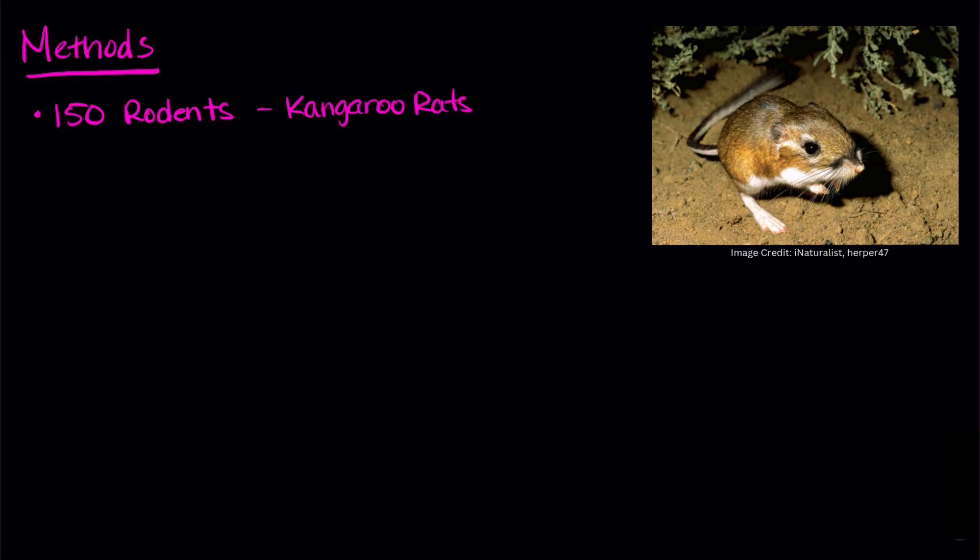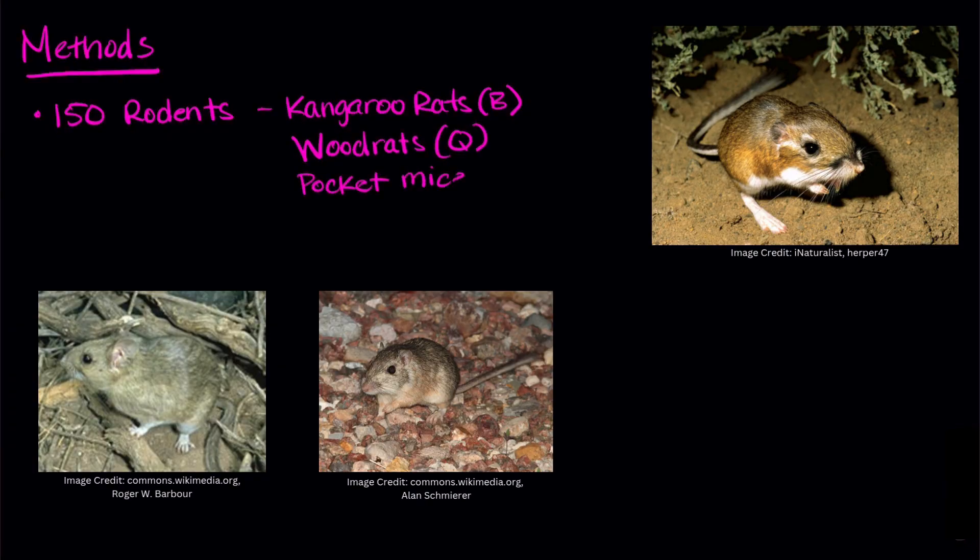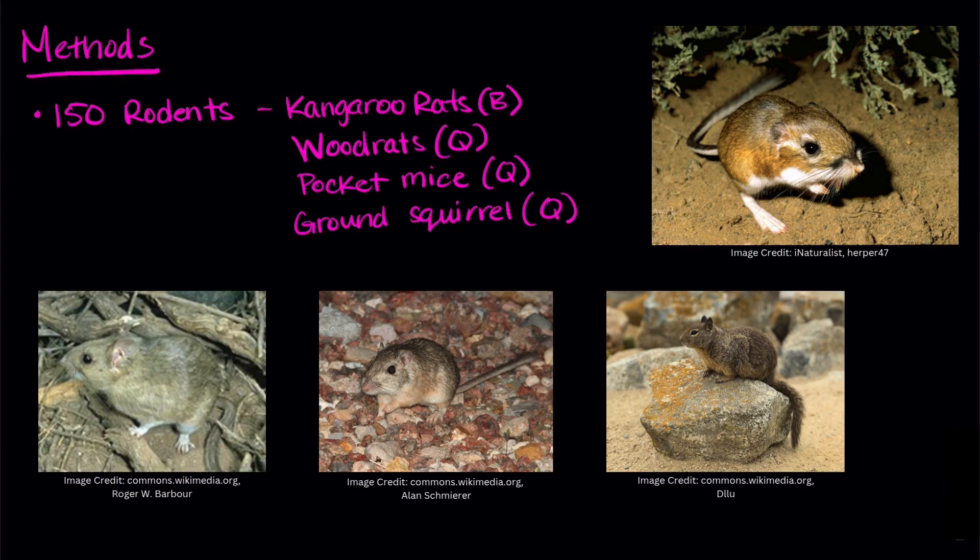Let's talk about the methods. First, the researchers had to find these rodents. So they traveled to the desert in southwest North America and captured 150 rodents. This included the bipedal kangaroo rats and then three other quadrupedal rodents. Those would be wood rats, pocket mice, and ground squirrels. The researchers tagged them, set them free, and tracked them back to their own burrows.